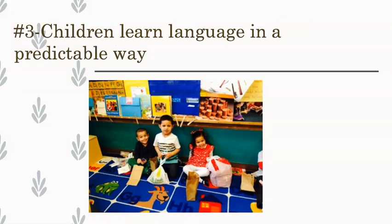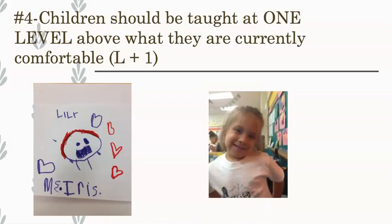There's a sequence in which children learn and develop language skills that is true for their native language and also for their target language. Another thing to be mindful of: children should be taught at one level above what they currently know and feel comfortable with. The input you provide needs to be one level above what they currently know. If it's too advanced, you're doing a disservice because the child won't comprehend; if it's below their level, you're not helping them continue to progress in their language acquisition.